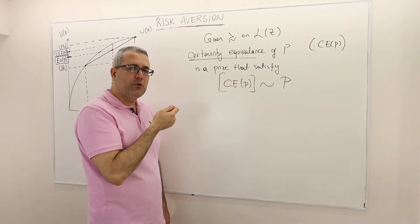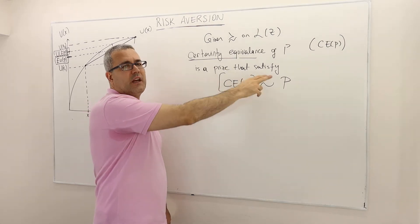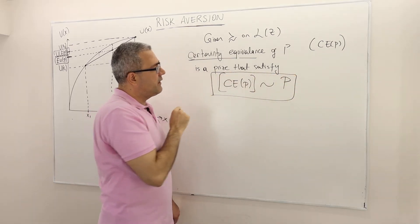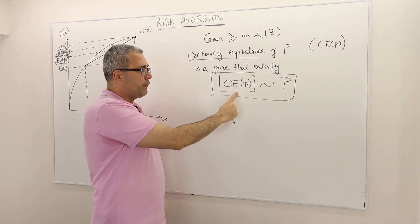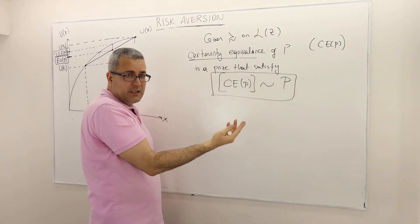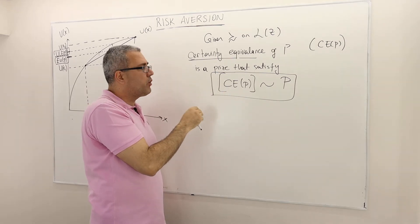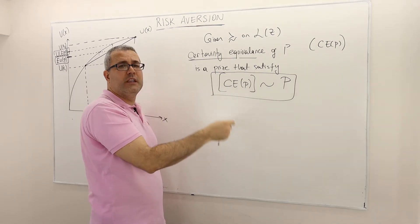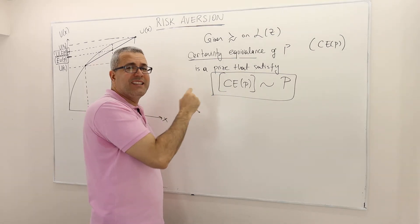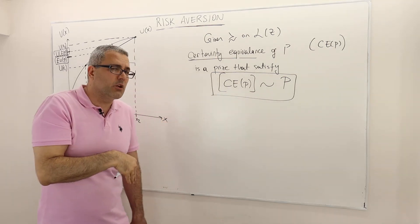A certainty equivalence of a lottery is a prize which satisfies this indifference. I offer you two lotteries: on one side, the lottery P itself; on the other side, it is a sure lottery where I offer you the certainty equivalence as a prize. Whatever that prize level is satisfying this indifference, we call it certainty equivalence.